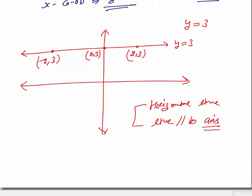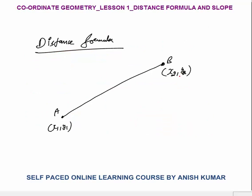On any line parallel to the x-axis, the y-coordinate always remains the same — here it is 3 at every point. This concept will be useful while discussing further topics in coordinate geometry. Next is the most fundamental concept: the distance formula, which is the most important concept in coordinate geometry.